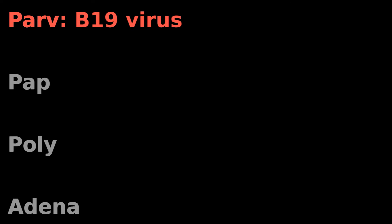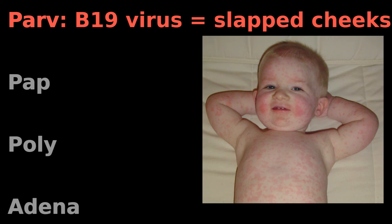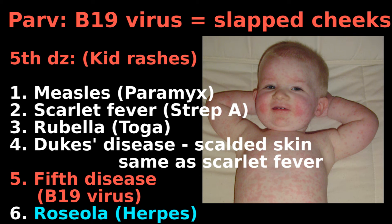Parvovirus includes the B19 virus, which causes slapped cheek rashes in kids. This is the fifth disease of kid rashes.